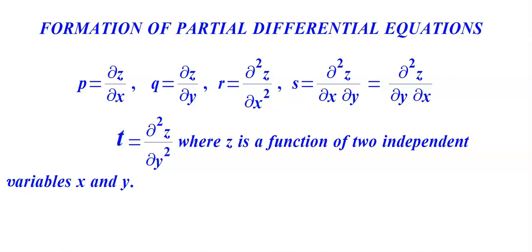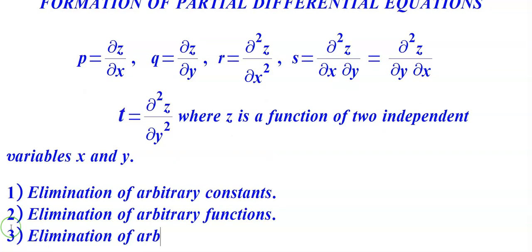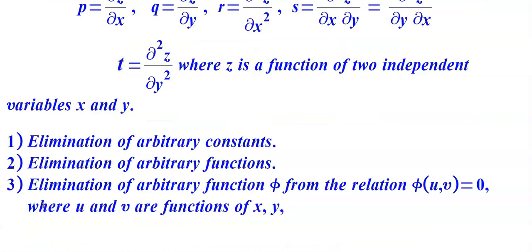In this section, we are going to deal with 3 types of problems: first, elimination of arbitrary constants; second, elimination of arbitrary function; third, elimination of arbitrary function phi from phi(u, v) = 0, where u and v are functions of x, y, z.